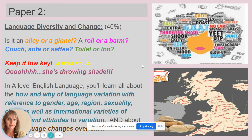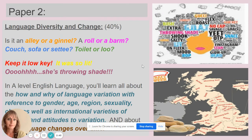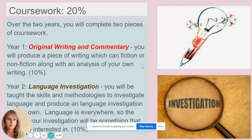We look at accents and dialects, and how language varies according to gender, age, and sexuality, as well as looking at international varieties of English and attitudes towards variation. The other part of Paper 2 is language change over time.